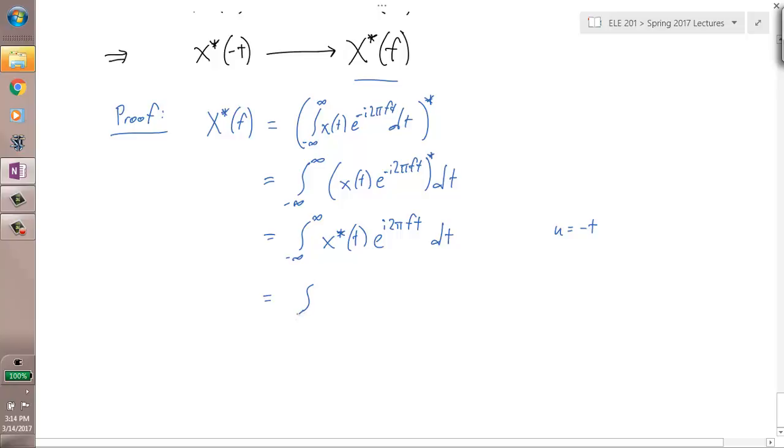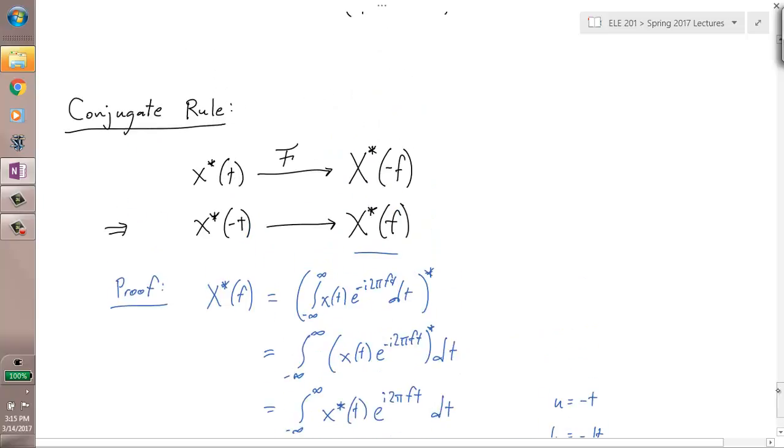So U equals negative T is going to get this type of thing. It's going to be infinity to negative infinity, X conjugate of negative U, E to the negative I two pi F U, DU. Except DU equals negative DT, so I have to put a negative out front. Negative will just go into this limits of this integral. So we get integral from negative infinity to infinity, negative U, equal negative I two pi U, DU, equals the Fourier transform of X conjugate of negative T. It's just U happens to be the variable I'm using for integration there. So we verified that second step.